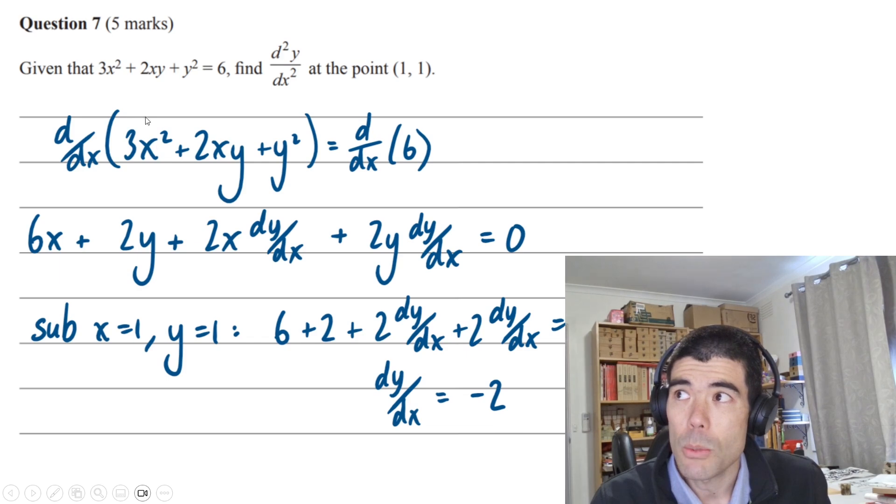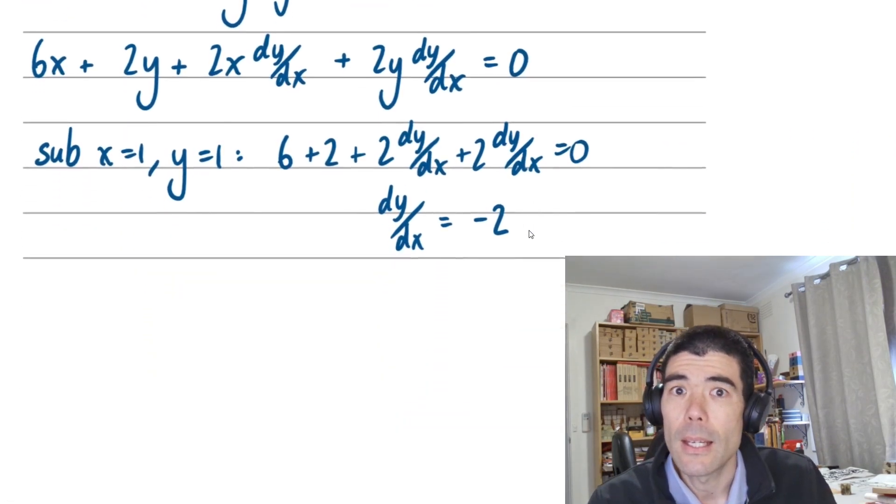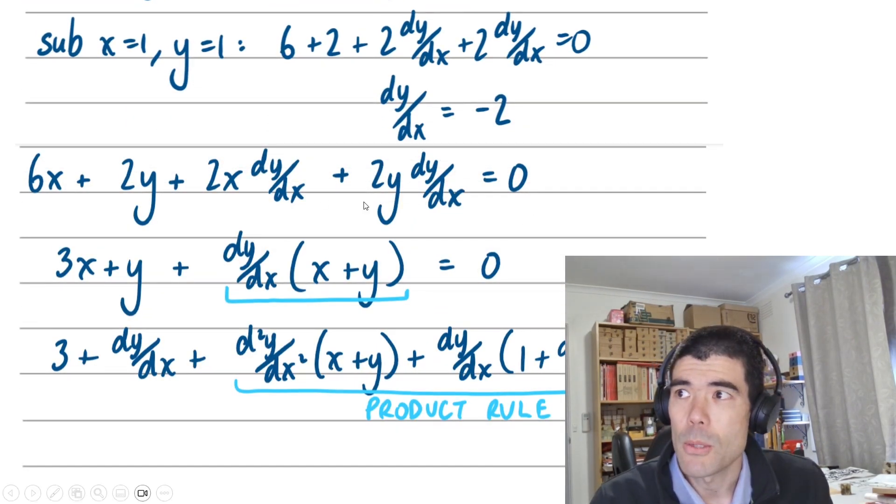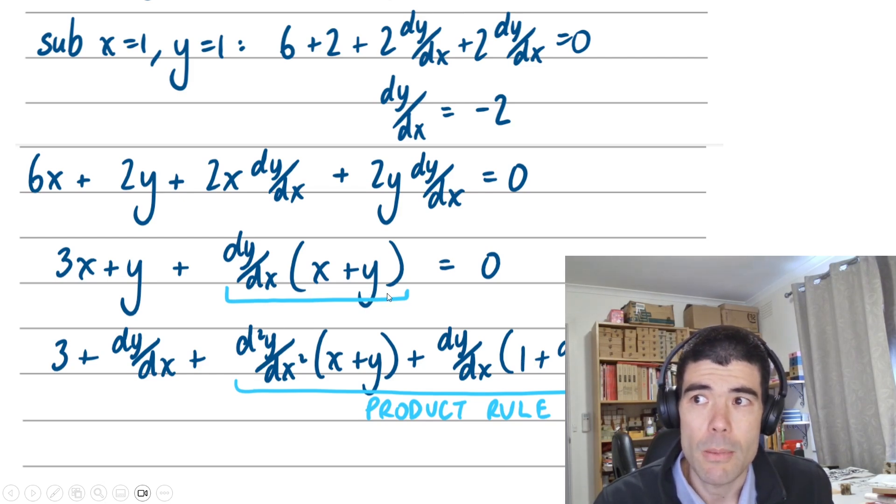But we're not done. This was a 5 mark question. We have to work out the second derivative. So we need to take our first derivative and then differentiate it again implicitly. Just to make it easier, divide everything by 2 and then take the dy/dx out as a common factor.